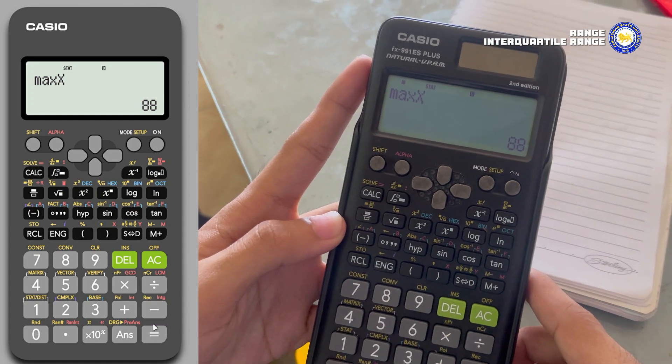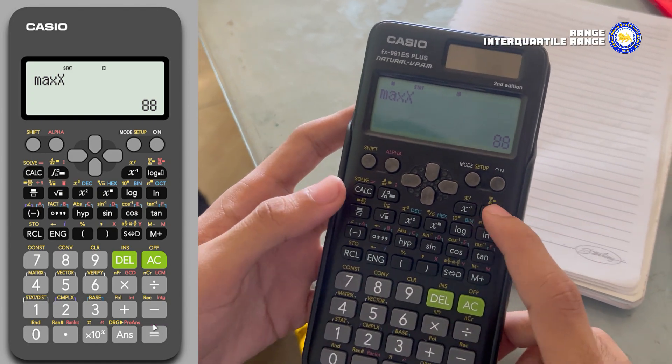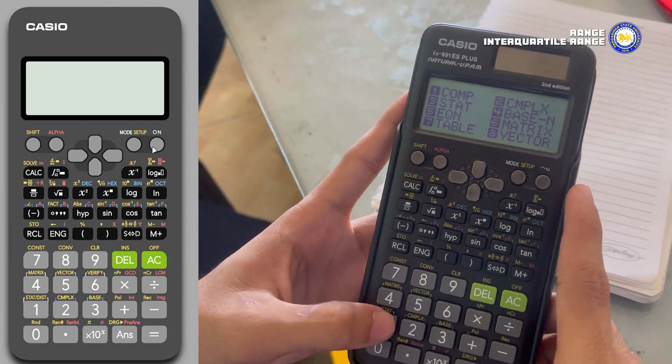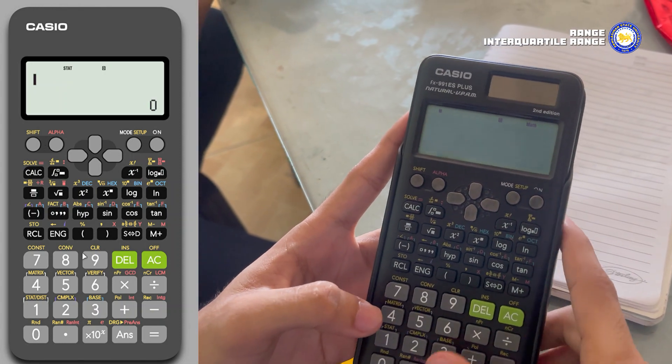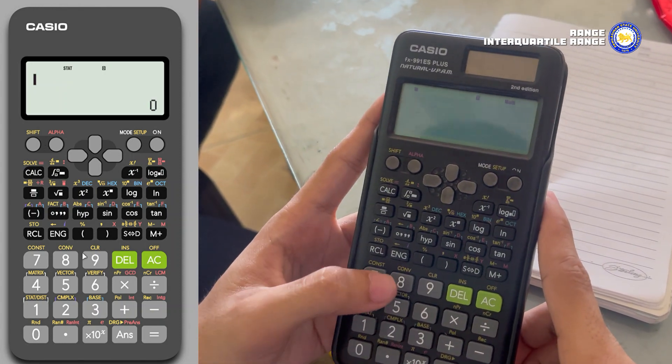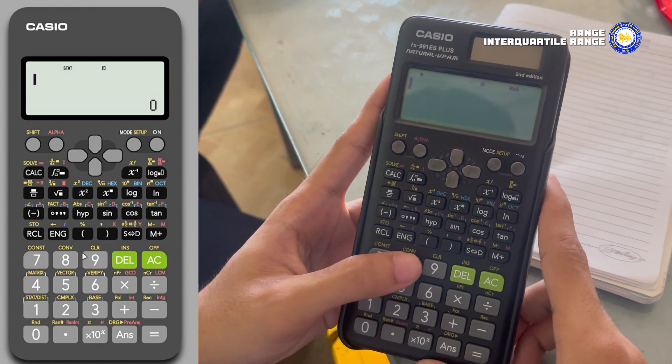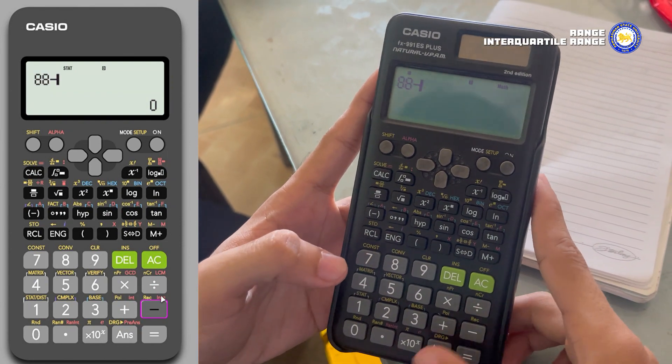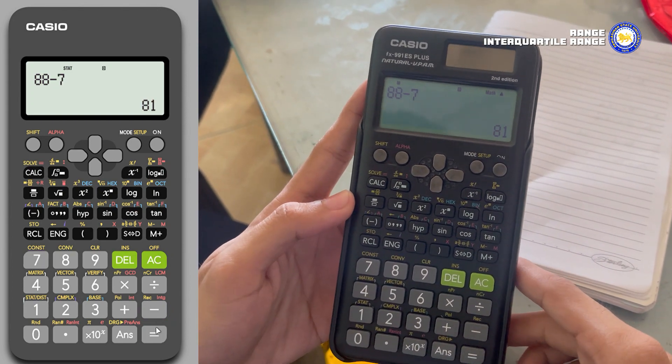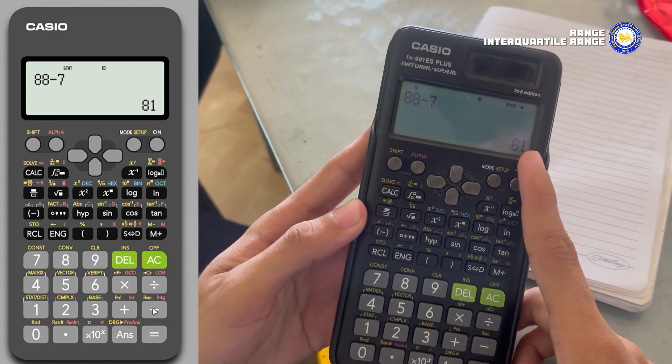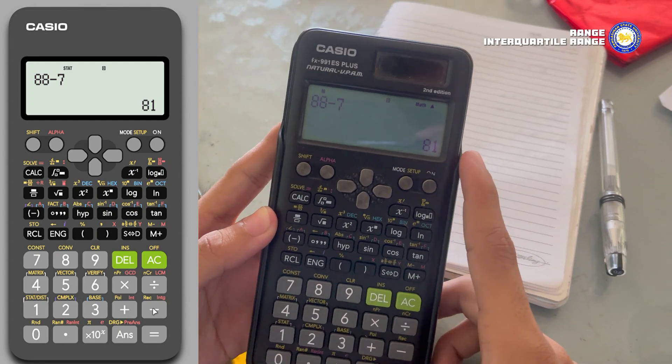To get the range, go to computation mode. The formula to get the range is maximum minus minimum. The maximum value is 88 and the minimum value is 7, then press equal. The range of all numerical values is 81.